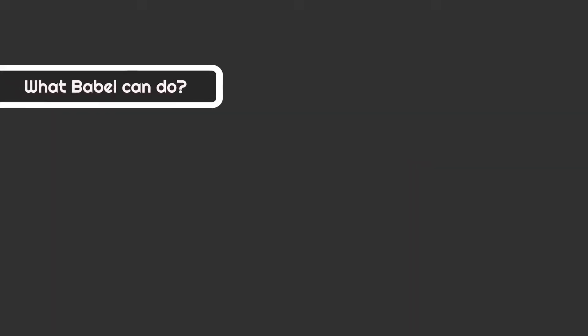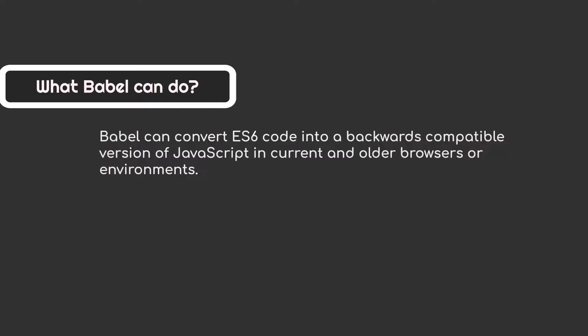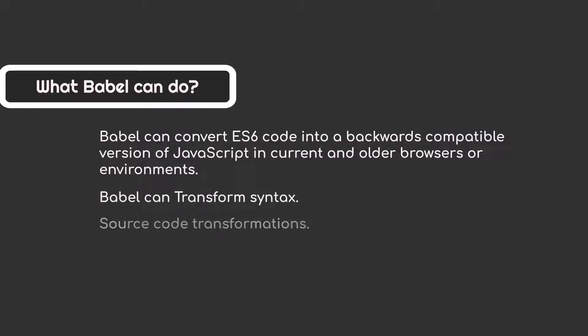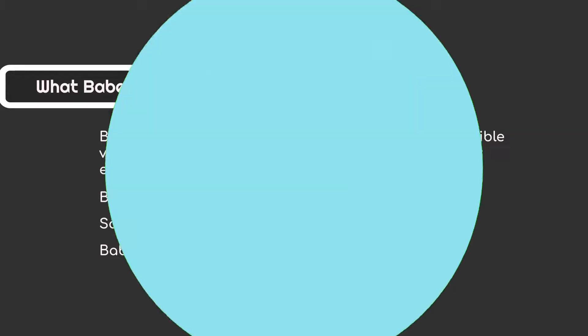But what can Babel do for you? Babel can convert ES6 code into a backward compatible version of JavaScript in current and older browsers or environments. Babel can transform syntax, transform source code, and also convert JSX syntax, and do a lot more things. Now let's understand how to install Babel and convert ECMAScript 6 into ECMAScript 5.